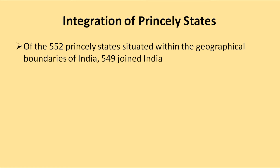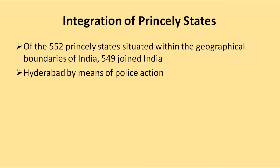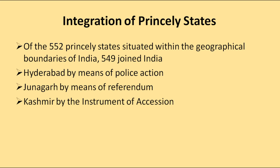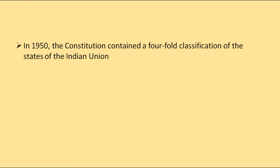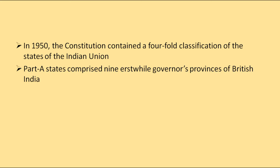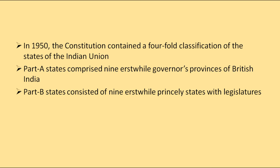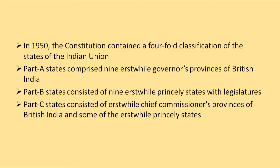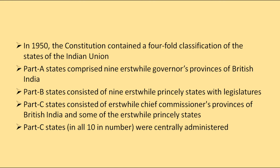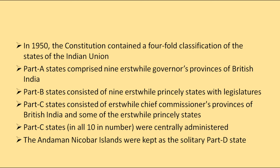At the time of independence, except for Hyderabad, Junagadh, and Kashmir, all princely states joined India. Hyderabad was integrated by means of police action, Junagadh by means of referendum, and Kashmir by the instrument of accession. States were then classified into a fourfold system: Part A states (former Governor's provinces), Part B states (princely states with legislatures), Part C states (Chief Commissioners' provinces administered centrally), and Part D (Andaman and Nicobar Islands, administered in isolation).